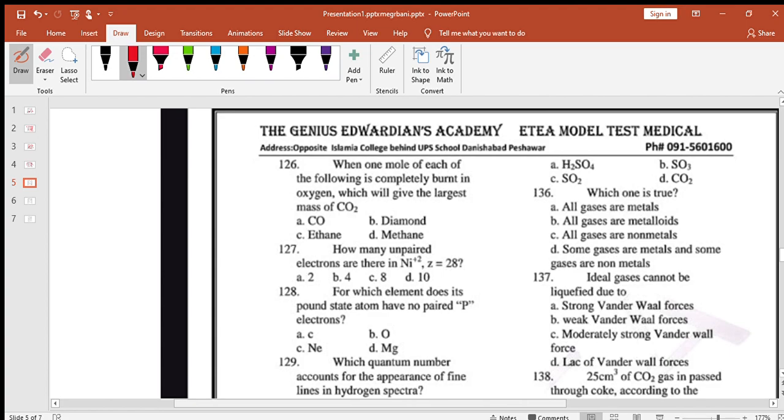Which will give the largest mass of carbon dioxide? CO, carbon diamond, methane, ethane, or carbon. It means the most.